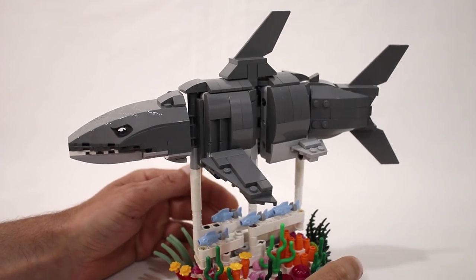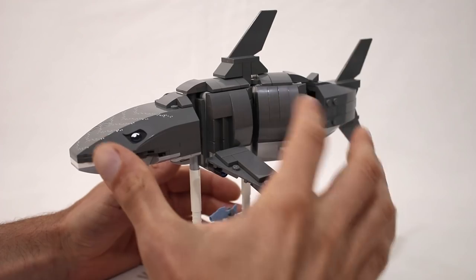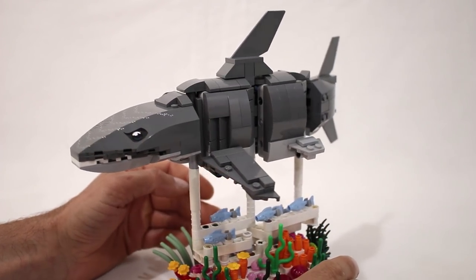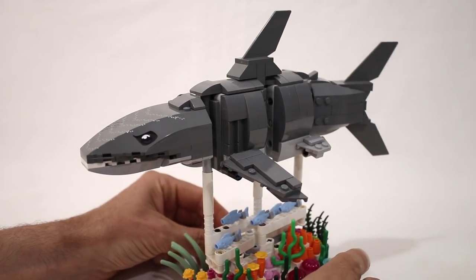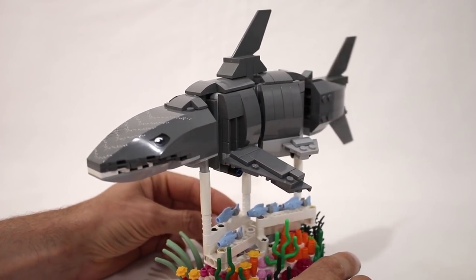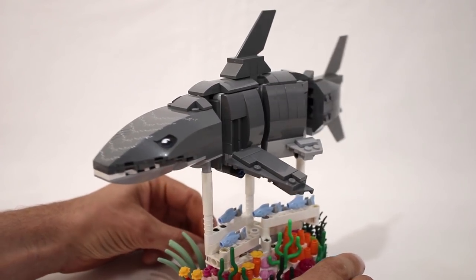The shark itself is pretty straightforward. It's mostly built out of curved slopes just clad onto the side of the Technic frame, and I did find this printed shark piece from an old 2007 Aqua Raider set I had.